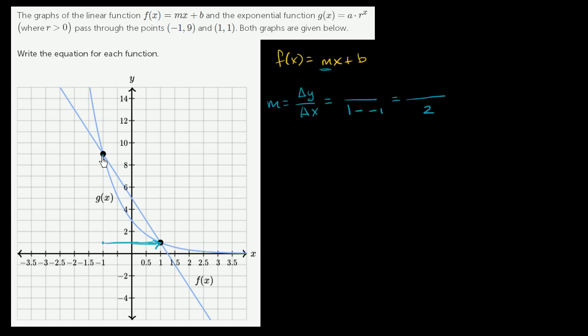And what about our change in y? We start at 9 and we end up at 1. So 1 minus 9 is -8. When x is 1, y is 1. When x is -1, y is 9. We just took the differences. We get -8 over 2, which is equal to -4.